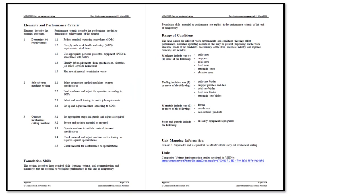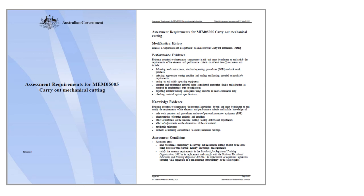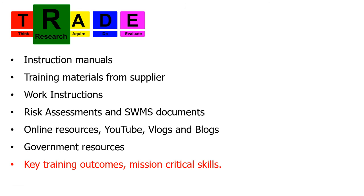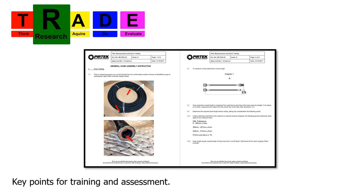In the unit description document we can see detailed key performance criteria for the unit. There is also an assessment docket available to help you create relevant assessments. Last but not least, are the key training outcomes or mission critical skills. The work instruction will come in handy here as it contains all of Pertec's criteria for correct hose cutting and ensures we align with the company's objectives.